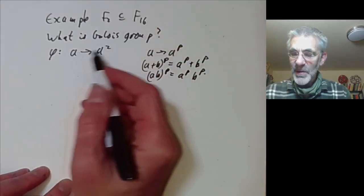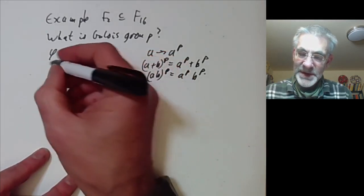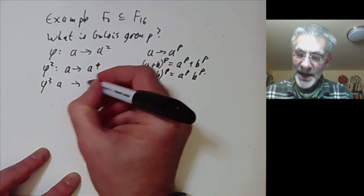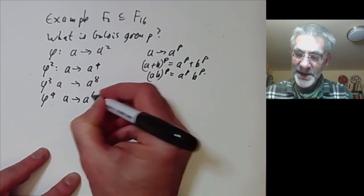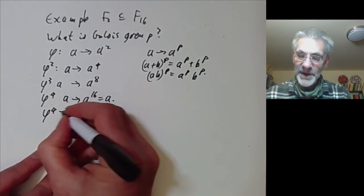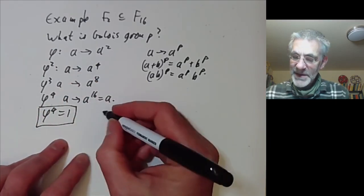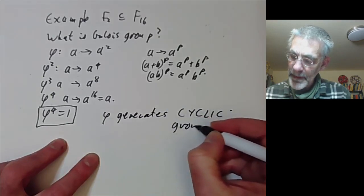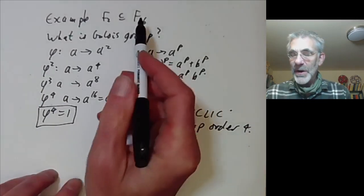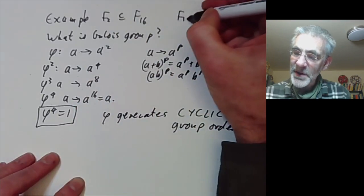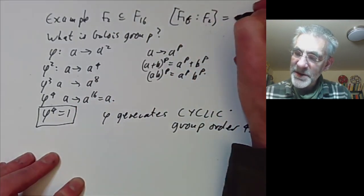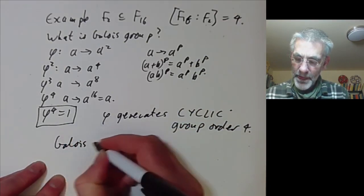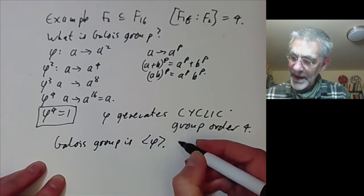We can ask what order the Frobenius φ has. φ² takes a to a⁴, φ³ takes a to a⁸, and φ⁴ maps a to a¹⁶ = a, so φ⁴ = 1. Thus φ generates a cyclic group of order 4. Since the degree of F₁₆ over F₂ is 4, we have found the full Galois group: it is cyclic of order 4, generated by φ.